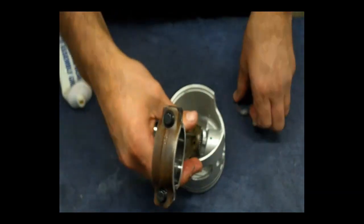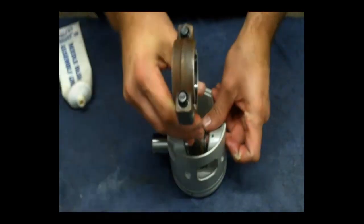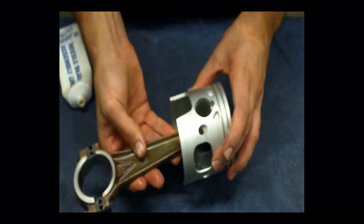Now get the other washer and install it on the other side of the connecting rod. And then just slide it easily down.